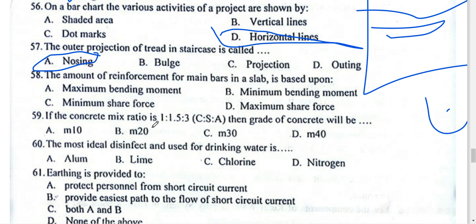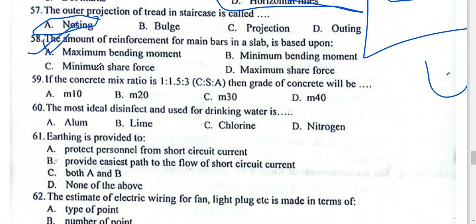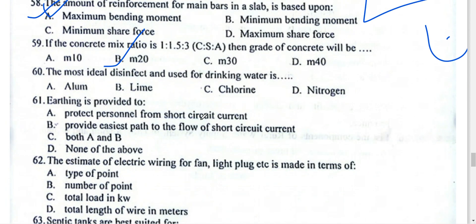The maximum amount of main reinforcement in a slab is determined by the maximum bending moment. The M21 Dead-3 ratio is standard. The most ideal and widely used method of disinfection for drinking water worldwide is chlorination.